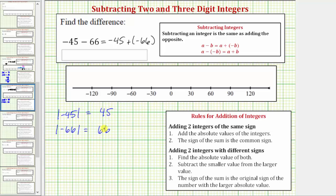So now we add the absolute values: 45 plus 66. Five plus six is 11, perform an exchange, one plus four plus six is 11. The sum of the absolute values is 111. For the sign of the original sum, we use the common sign — because we have a negative plus a negative, the sum is negative 111.